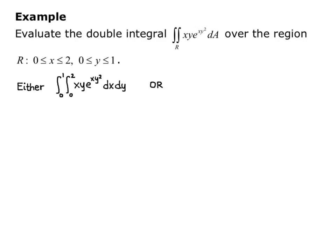Or, if we do y first, we have the inner integral with y going from 0 to 1 of xy·e^(xy²) — the integrand does not change. Then the outer integral is with respect to x, giving the double integral from 0 to 2 of the integral from 0 to 1 of xy·e^(xy²) dy dx.